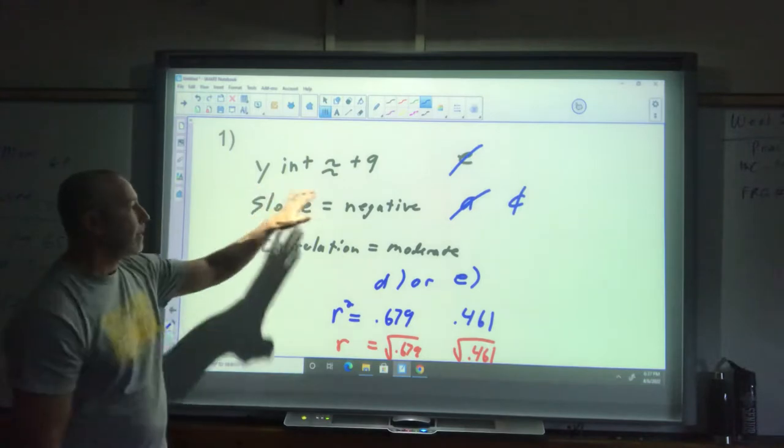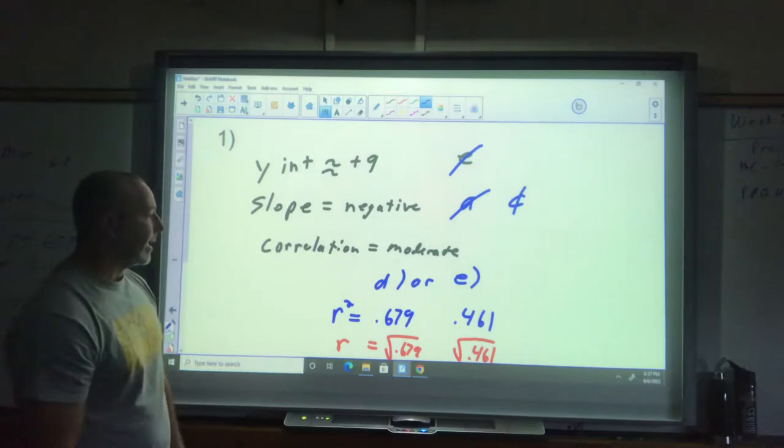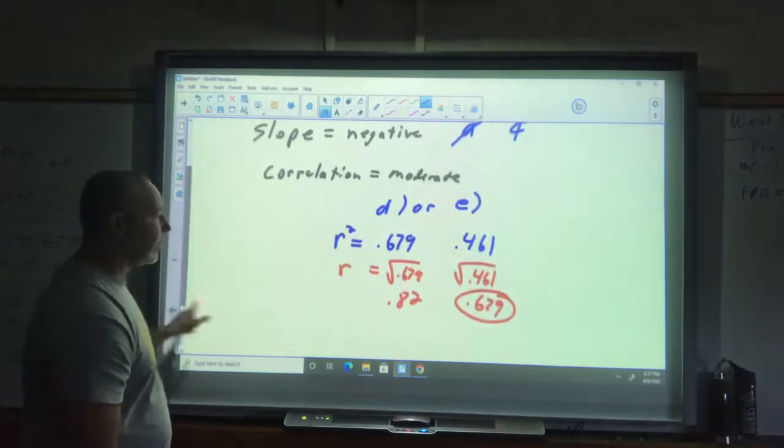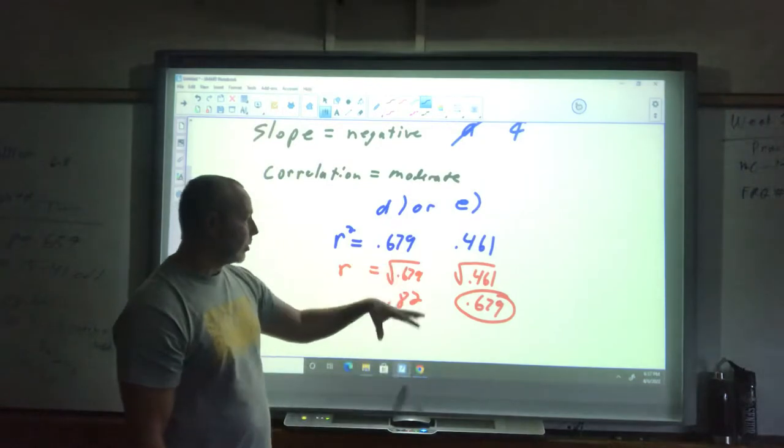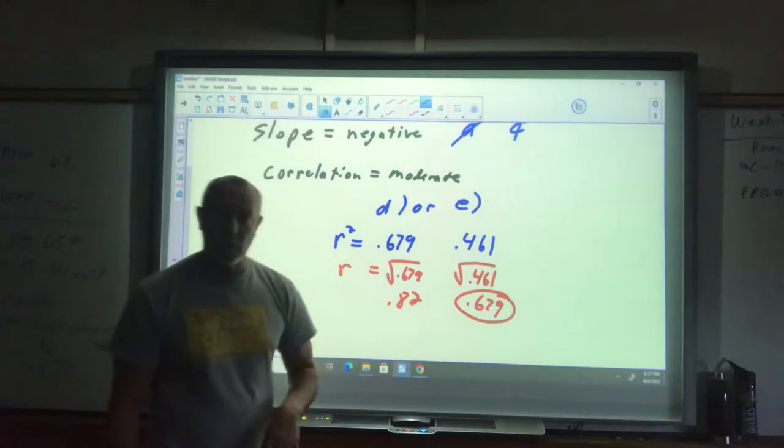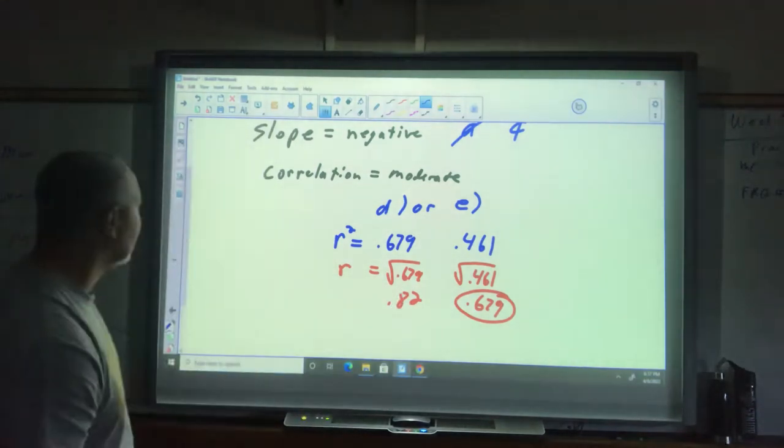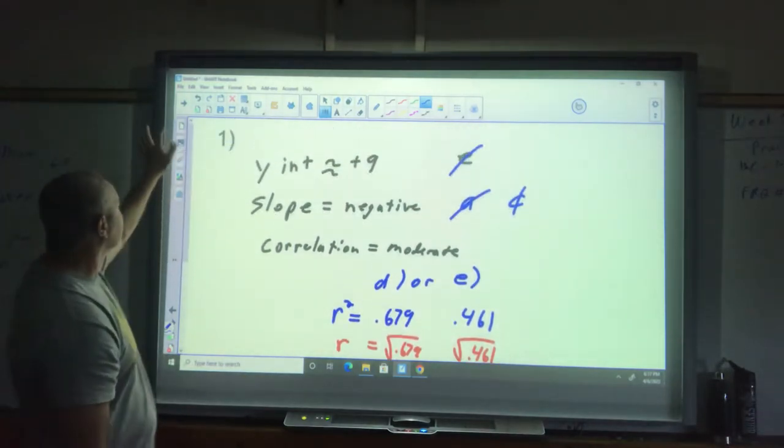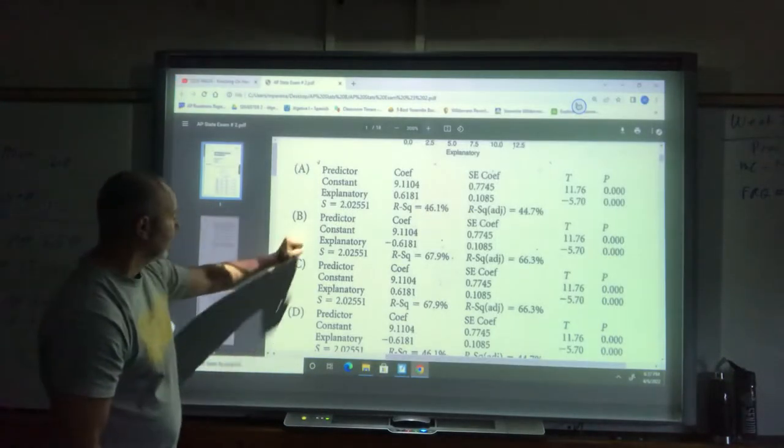When I square out those values, the y-intercept is positive, that eliminated e. Slope is negative, that got rid of a and c. My choices left are d and e. The r-squared values are 0.679 and 0.461. When I square root those, I get 0.679 and 0.82. 0.82 would be strong correlation. I would say that's moderate, so 0.679 is the correct choice, and that choice is choice e.